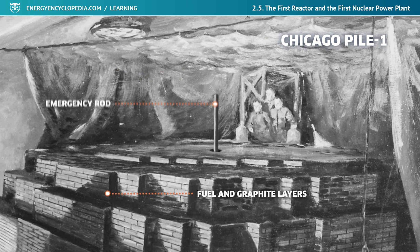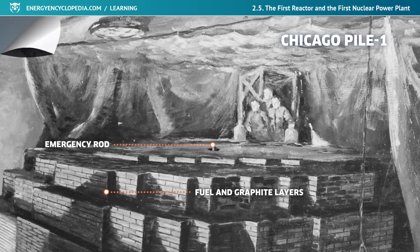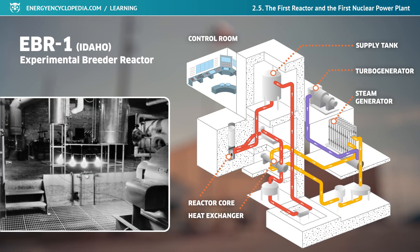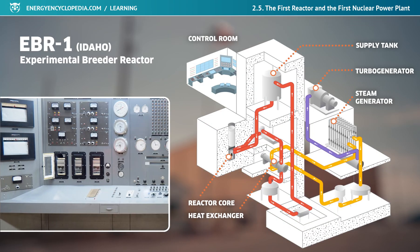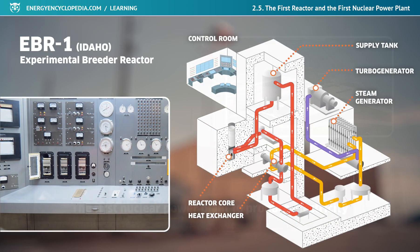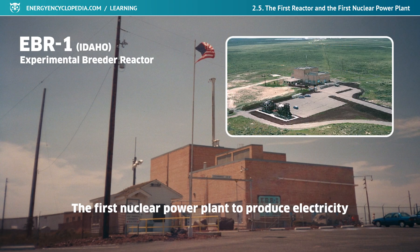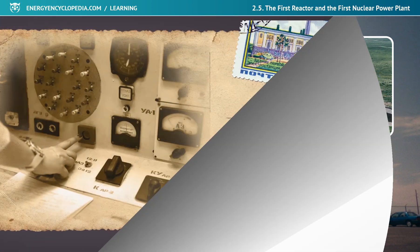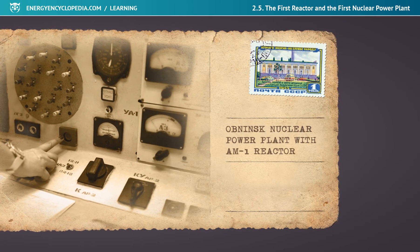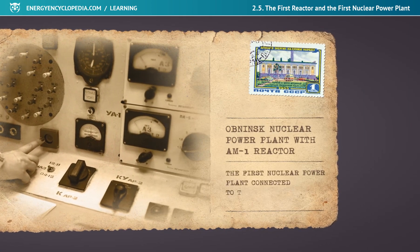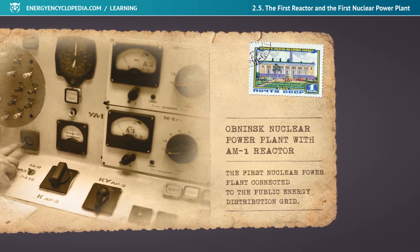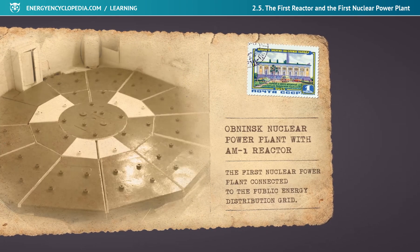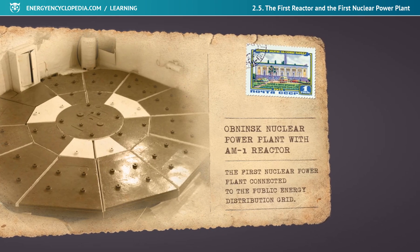From the first reactor, we'll move to the first nuclear power plant to light a lightbulb and see what this National Historic Landmark looked like. Finally, we will also stop at the first nuclear power plant which supplied the produced electricity to the public electricity distribution network.